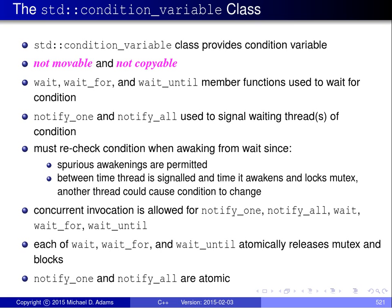In the standard library, the class condition_variable provides the functionality of a condition variable. Objects of the condition_variable class are neither movable nor copyable, simply because it wouldn't make sense to move or copy such objects. The class provides three variants of the wait operation via the member functions wait, wait_for, and wait_until. The wait member function blocks the calling thread until the thread is signaled or a spurious awakening occurs. The wait_for and wait_until member functions perform a wait operation with a timeout — the calling thread is blocked until signaled, a spurious awakening occurs, or the specified timeout period elapses. For wait_for, the time period is specified by its duration, while for wait_until, the time period is specified by its endpoint in time.